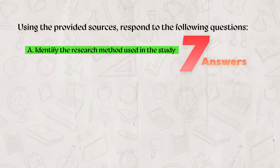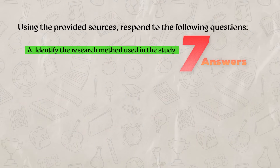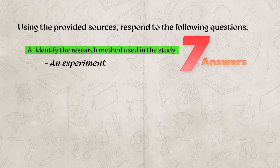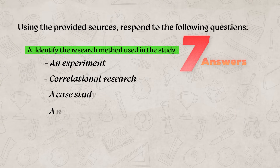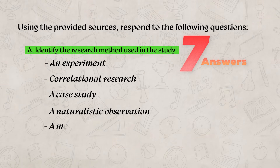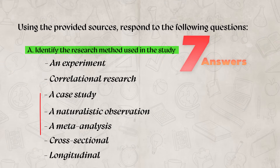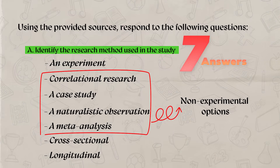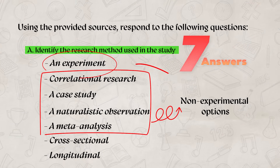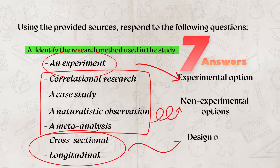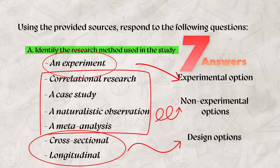For Part A, there are only seven answers you can give. You can say the research method used in the study was an experiment, correlational research, a case study, a naturalistic observation, a meta-analysis, or you could say it was cross-sectional or longitudinal. Notice four of those research methods are non-experimental options, one is an experimental option, and two are design options for a research method.